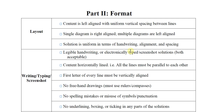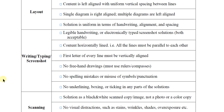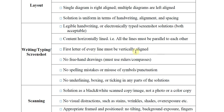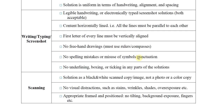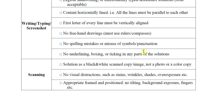For writing, typing, or screenshots: legible handwriting, electronically typed solutions, or screenshot solutions are all acceptable. Content must be horizontally aligned — all lines must be parallel to each other. The first letter of every line must be vertically aligned. No freehand drawing — rulers and compasses must be used. No spelling mistakes or misuse of symbols and punctuation. No underlining, boxing, or ticking in any part of the solution.